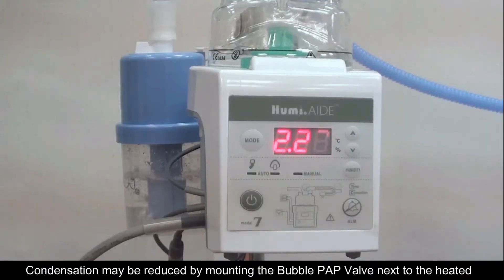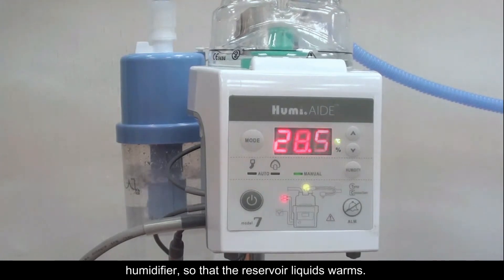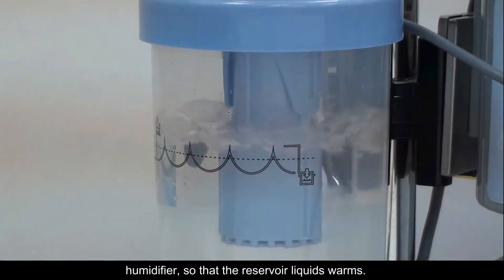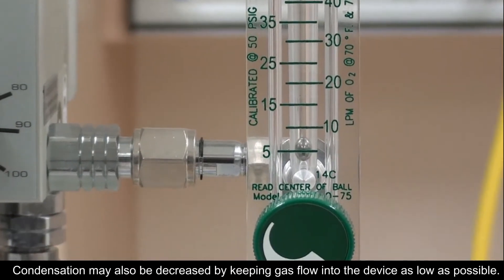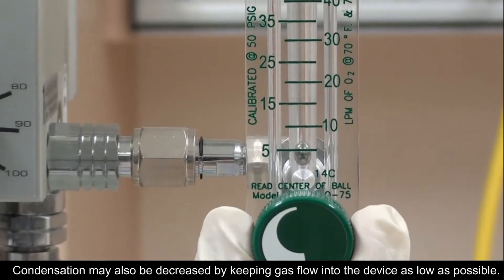Condensation may be reduced by mounting the bubble PEP valve next to the heated humidifier so that the reservoir liquid warms. Condensation may also be decreased by keeping gas flow into the device as low as possible.